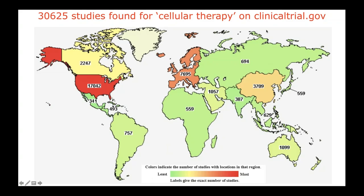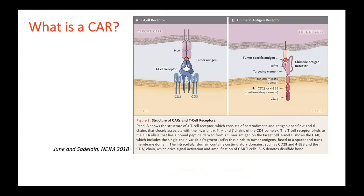If you search on clinicaltrials.gov, you can find more than 10,000 studies for cellular therapies around the world. Most studies were conducted in the US, Europe, and there is growing interest in China as well. Now let's come to CAR-T cells. What is a CAR-T?